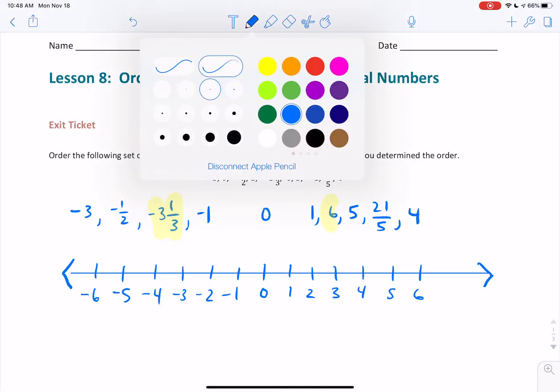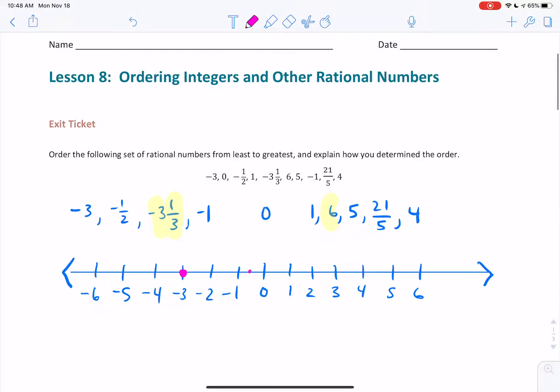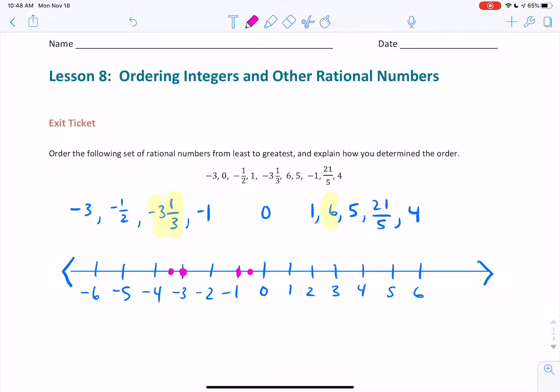I'm going to start with my leftmost numbers, negative 3. Negative 1 half is right here. Negative 3 and 1 third is going to be a little bit to the left of the negative 3. Negative 1 is there. Then we have a 0. Then we have 1, 6, 5. 21 over 5 is 4 and 1 fifth. 4 and 1 fifth is going to be a little bit past the 4. Remember, if you want to convert that, you just divide and use the remainder as your numerator. So 21 divided by 5 is 4, remainder 1. Therefore, it's 4 and 1 fifth. And then you have the number 4.